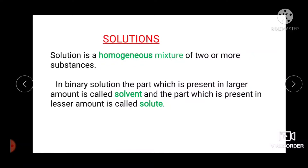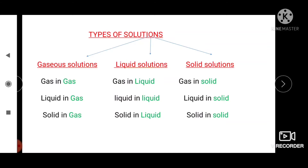A solution which has two components is known as a binary solution. NaCl in water and sugar in water are all examples of binary solutions. In this chapter, we are only discussing binary solutions. Each component may be solid, liquid, or in a gaseous state. Depending upon the nature of the component acting as solvent, solutions are classified as solid, liquid, and gaseous solutions.